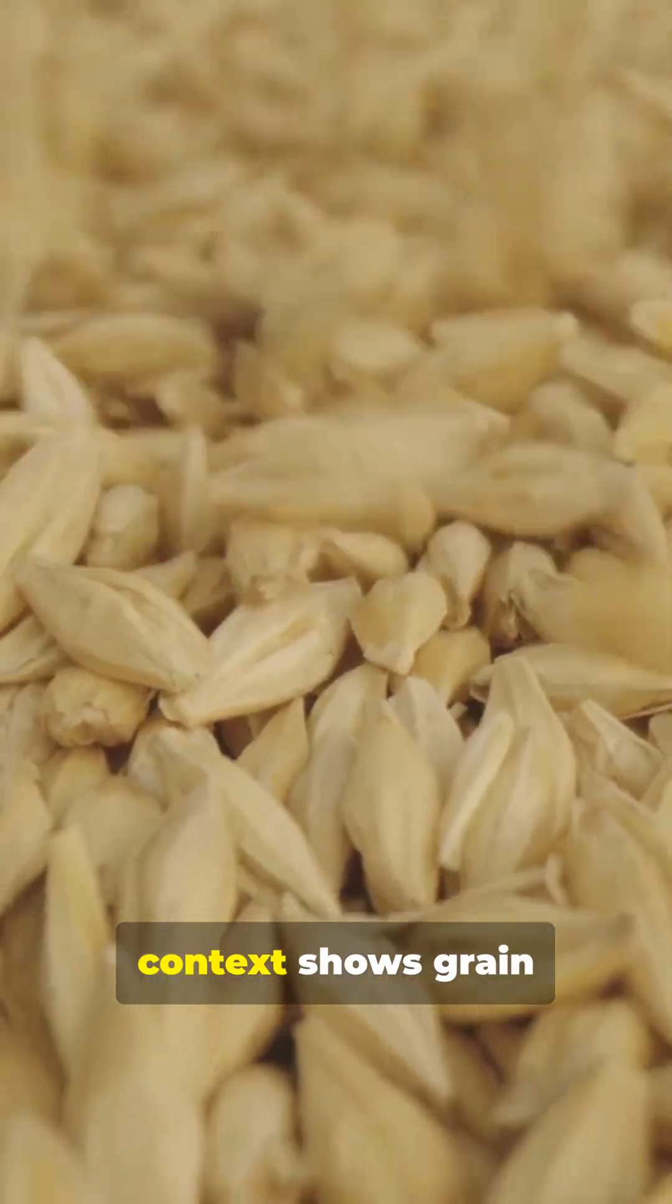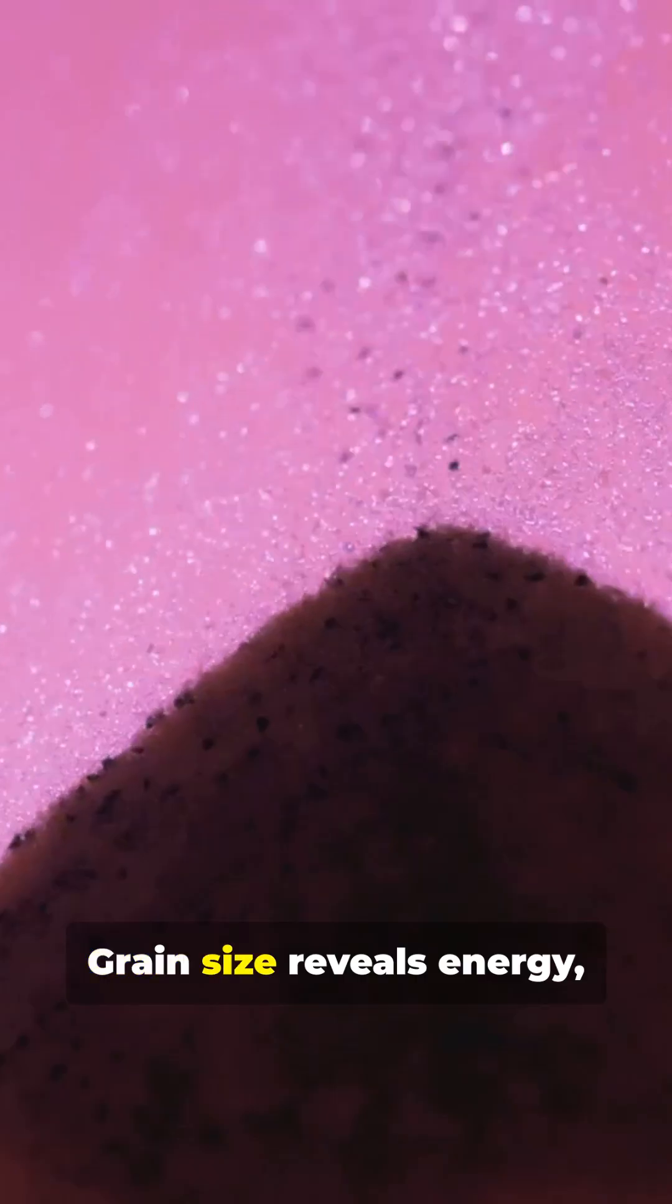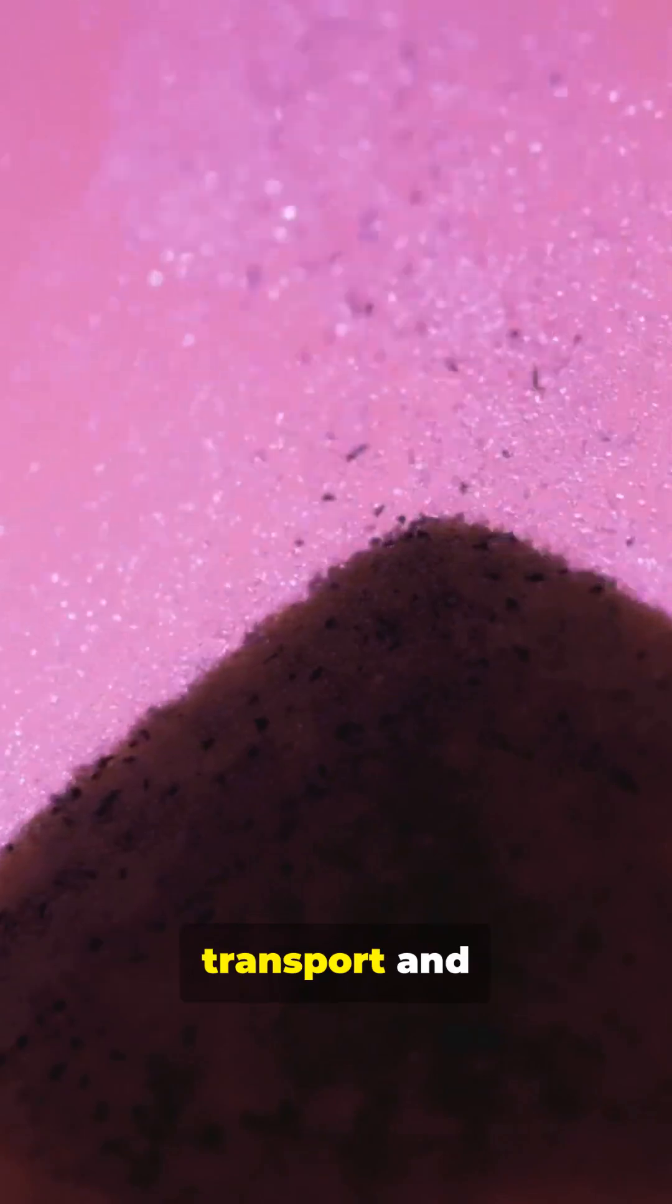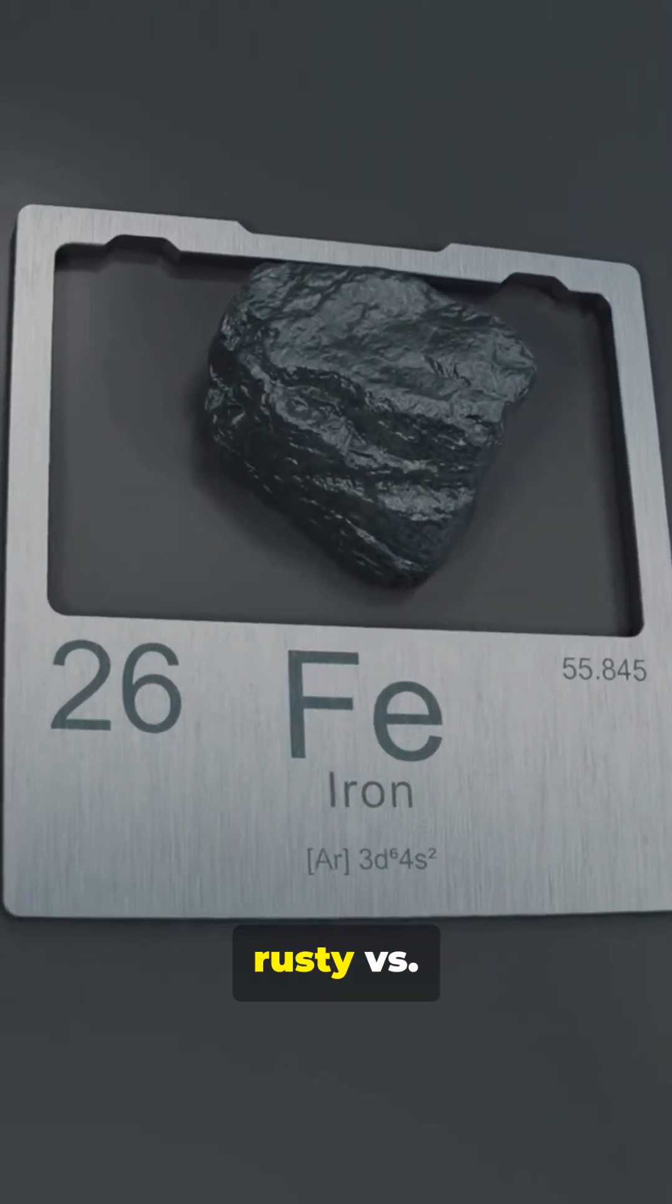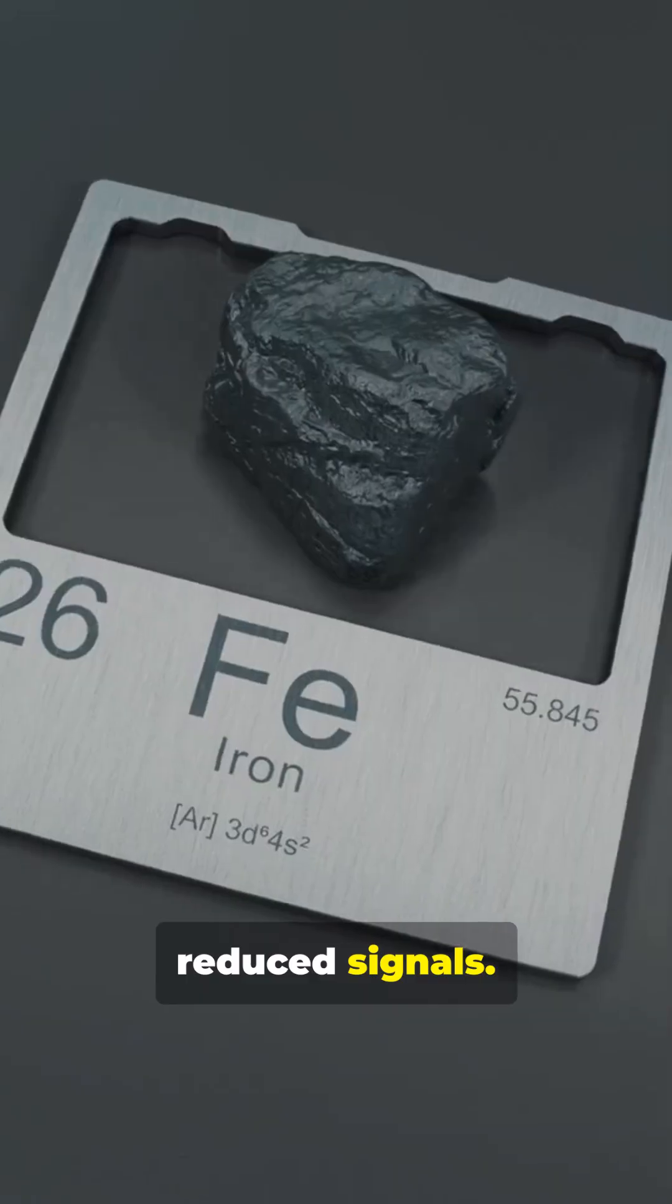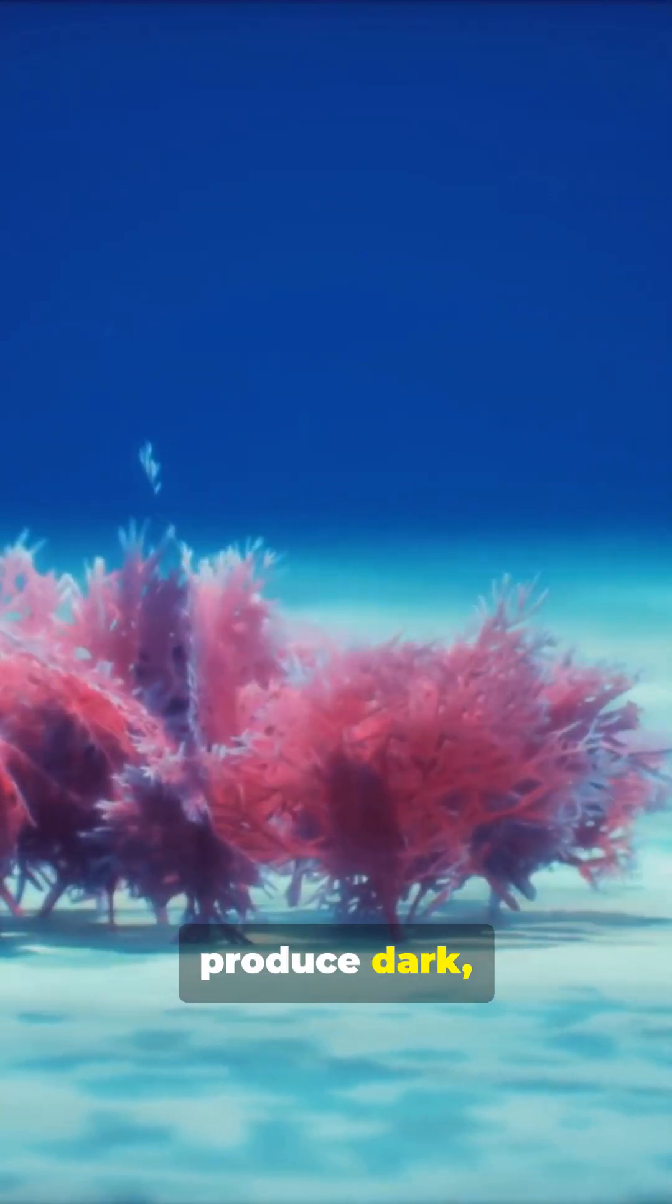Then sediment context shows grain size and iron minerals. Grain size reveals energy, transport and depositional depth. Iron minerals reveal oxygenation—rusty versus reduced signals. Muddy low-oxygen basins produce dark stagnant conditions.